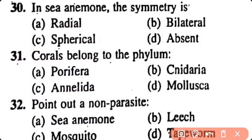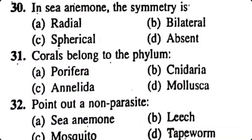Question number 30. In sea anemone, the symmetry is: radial, bilateral, spherical, absent. Option A. In sea anemone, radial symmetry is present.